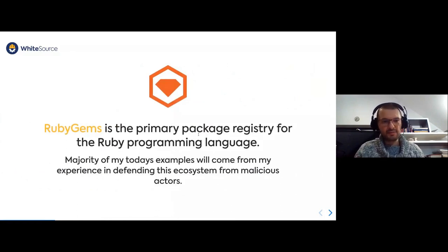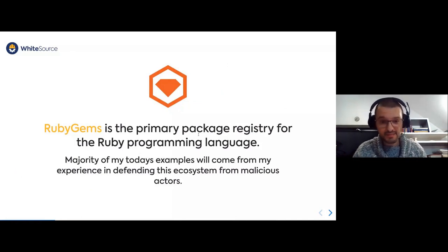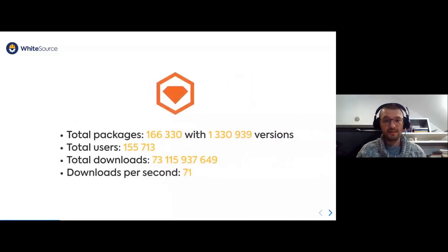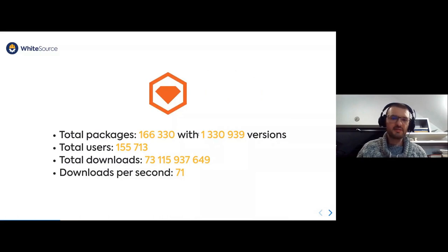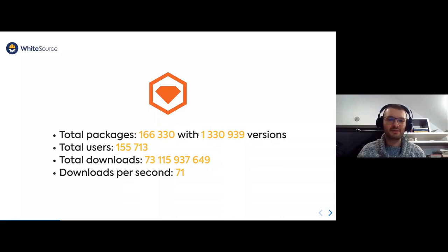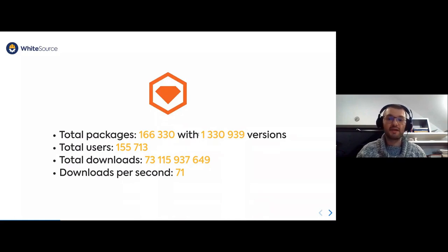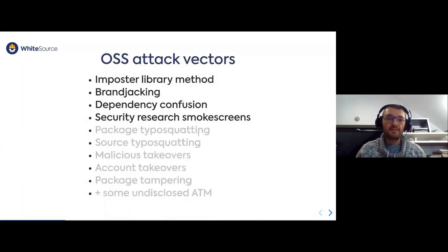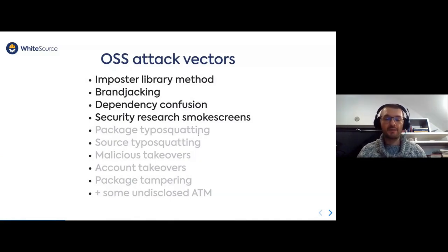Many of my examples come from the RubyGems ecosystem. RubyGems is a fairly popular ecosystem — it isn't as big as NPM, but it's still a decent one in terms of number of packages, releases, downloads, and other metrics. There are many open source attack vectors. I'm going to focus only on a couple of them.